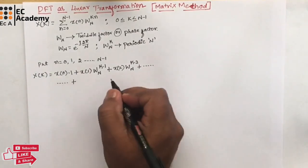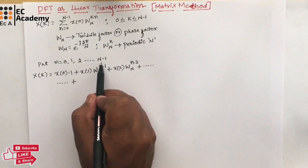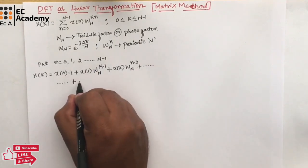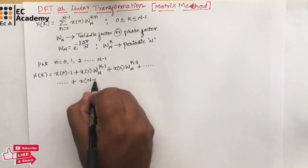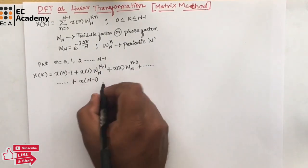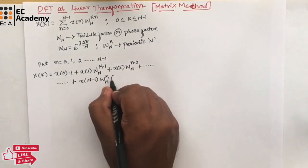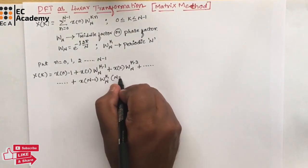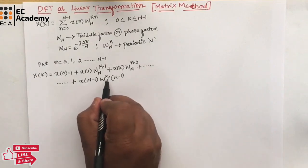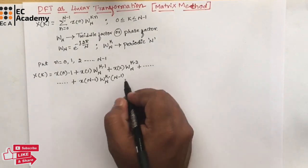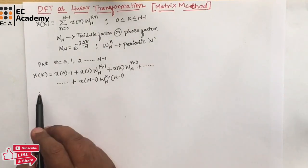Continuing, if we put n = N-1, the last term will be x(N-1)·W_N^(k(N-1)).